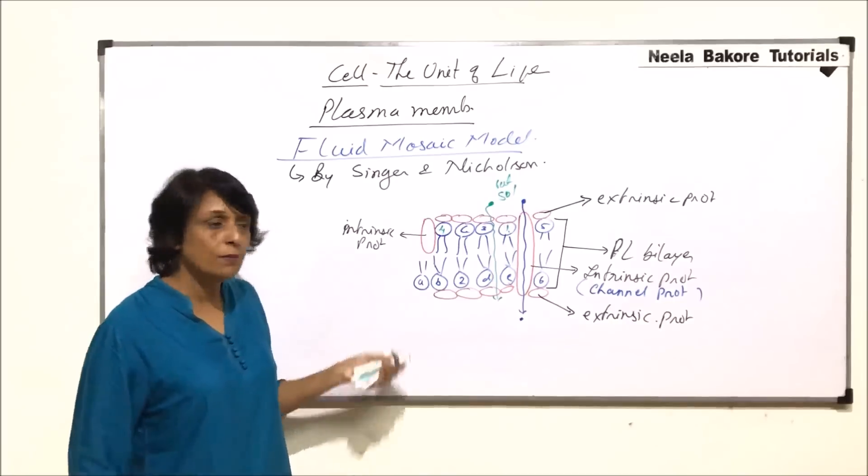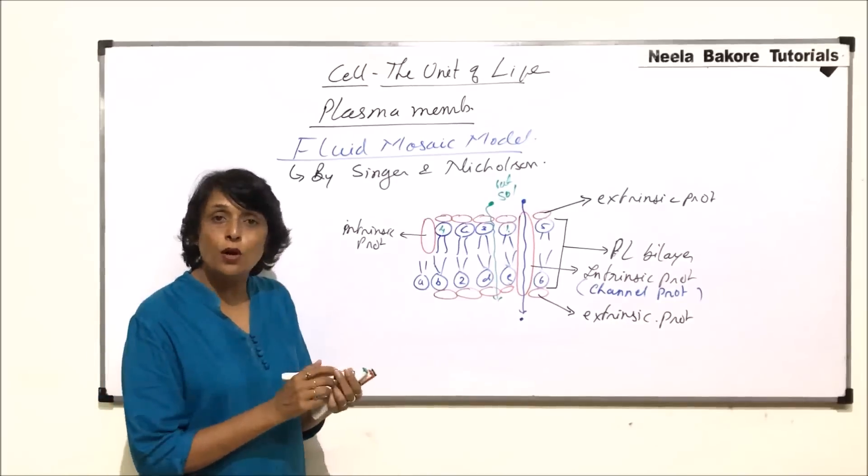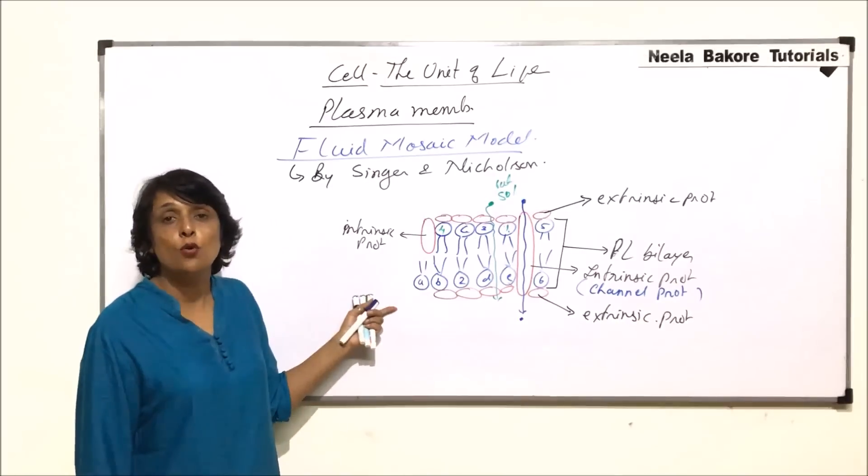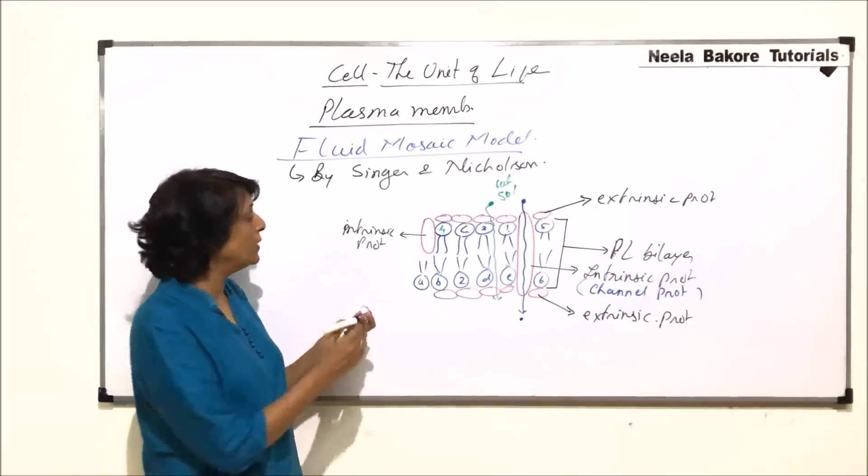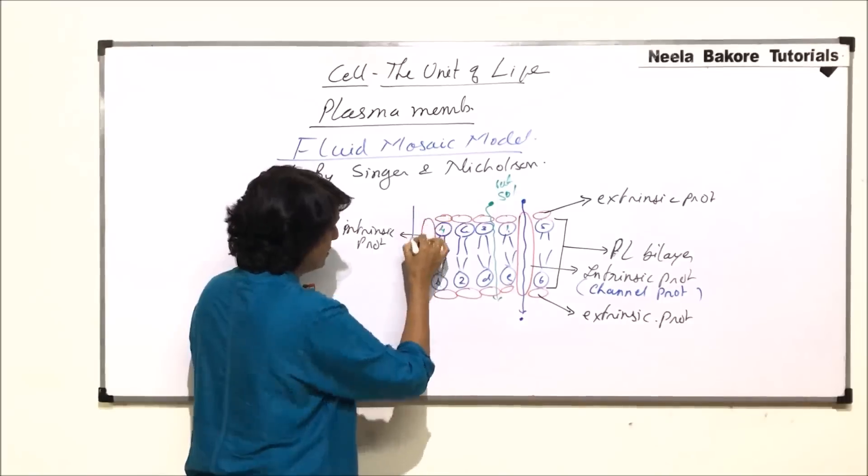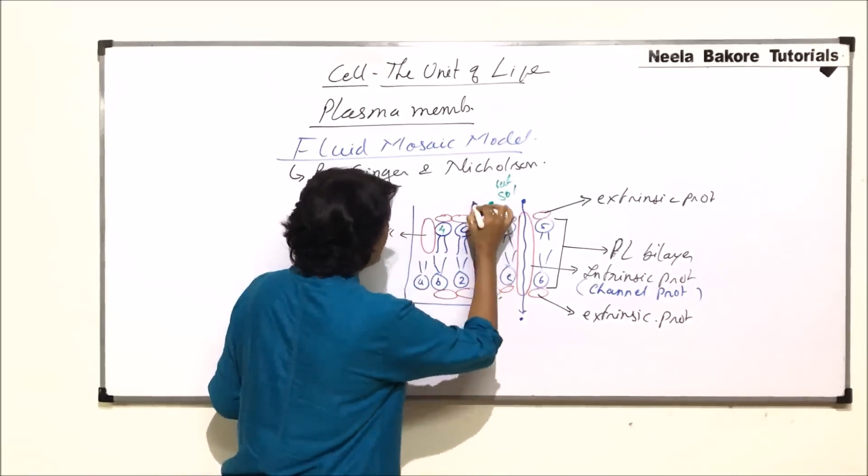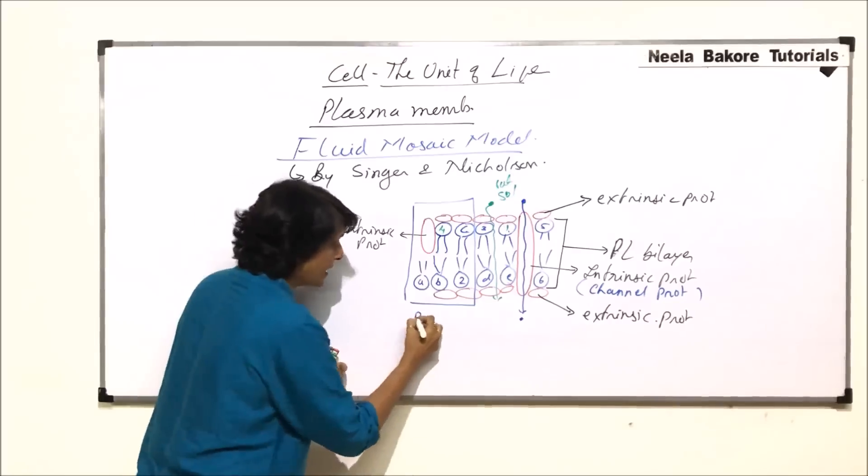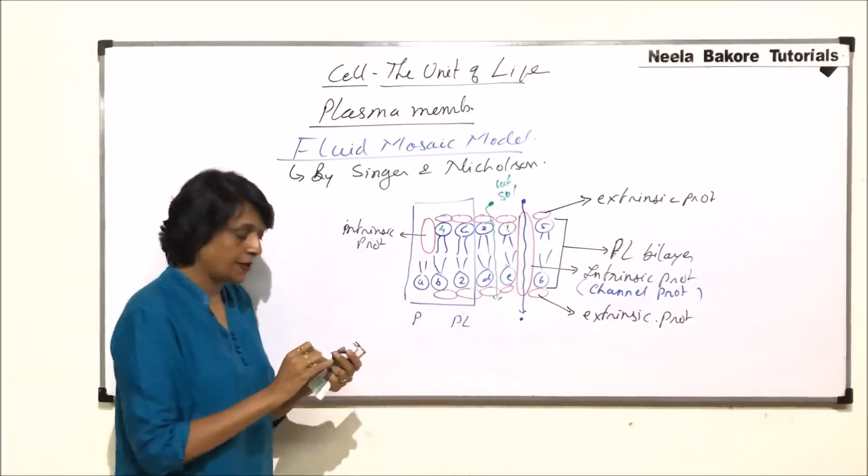Let us see the second point. The second point was that plasma membrane shows variable protein to phospholipid ratio. Suppose we take this much piece of plasma membrane. How many proteins and how many phospholipids?